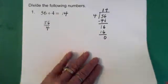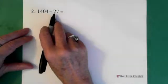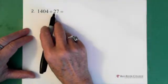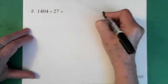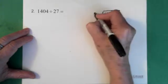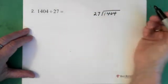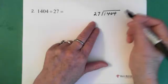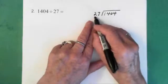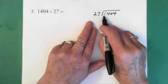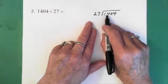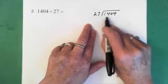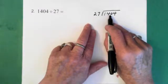Next question: 1404 divided by 27. The first thing we do is we ask ourselves, how many times does twenty-seven go into one? It doesn't. Does twenty-seven go into fourteen? No. Does twenty-seven go into one forty? Yes, it does.